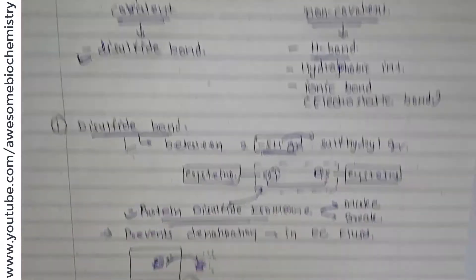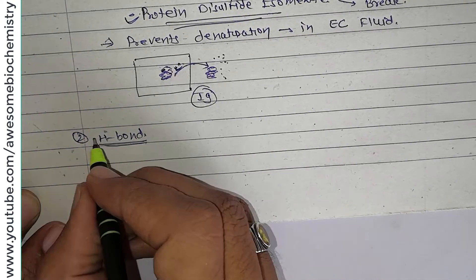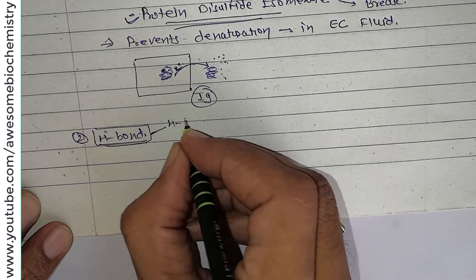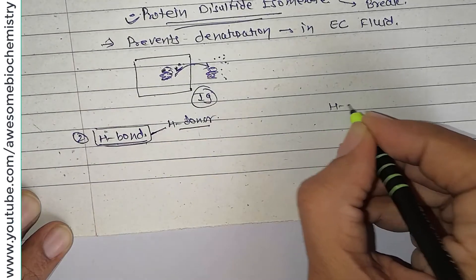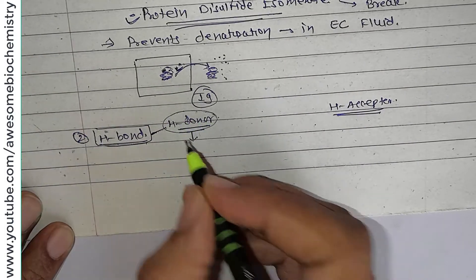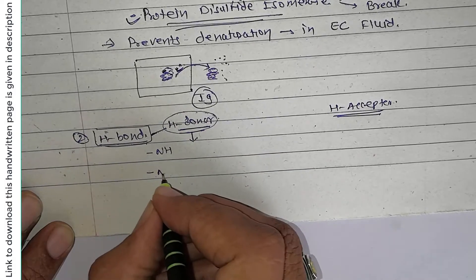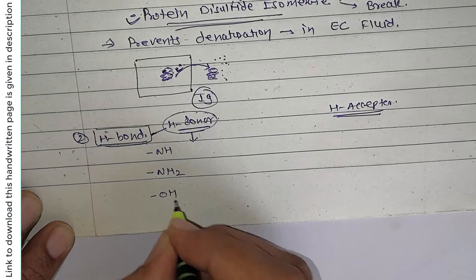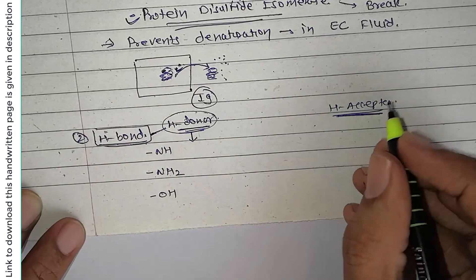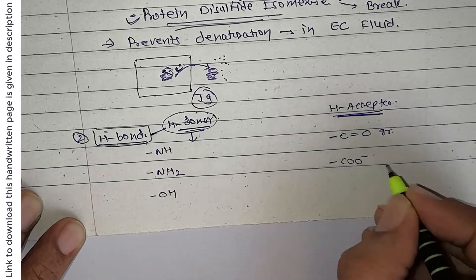Next, let's discuss hydrogen bonds. For hydrogen bond formation, two participants are required: a hydrogen bond donor and a hydrogen bond acceptor. In proteins, the groups that act as hydrogen bond donors are the NH group, the NH2 group, and the OH group. As hydrogen bond acceptors, we have the C=O group and the carboxyl group (C=O⁻).